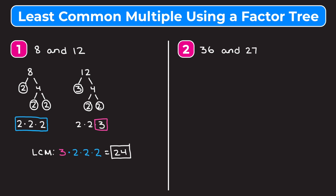Now let's take a look at example two: finding the LCM of 36 and 27. This factor tree method is especially helpful when dealing with bigger numbers like these. For example one, you could have just written out a list of multiples for 8 and 12, but once your numbers get bigger it's hard to write out lists of multiples, so let's go ahead and start by making a factor tree for 36.